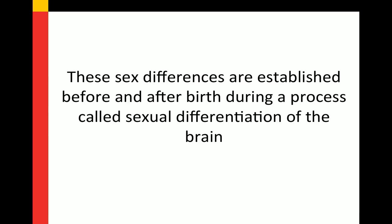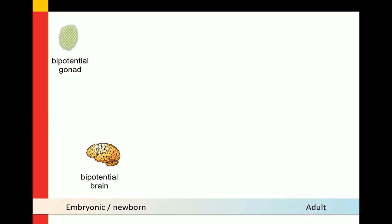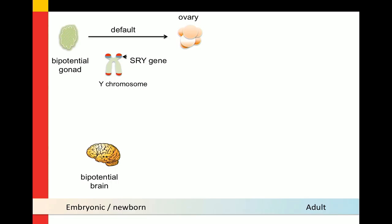Sex differences are established early, before and after birth, during a process called sexual differentiation of the brain. We start with the gonad, which is bipotential — just a small cluster of cells near the genital sinus below the kidney — equally capable of becoming a testis or an ovary, but by default it's going to become an ovary. In the absence of the Y chromosome and the sex-determining region SRY, you will get an ovary. If the Y chromosome is present with the SRY gene, you will instead get a testis.